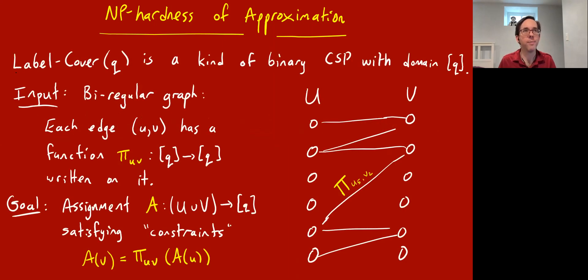What is label cover? It's a kind of CSP, and actually there's a parameter q, which is the size of the domain. CSPs have variables that you're trying to assign values to from some domain, and label cover(q), the domain is just the integers 1 through q. You're given some constraints, and in label cover, all the constraints are binary, meaning they operate just on two variables. Then it's good to draw the picture of the CSP as a graph, where you have a vertex for each variable and an edge for each constraint.